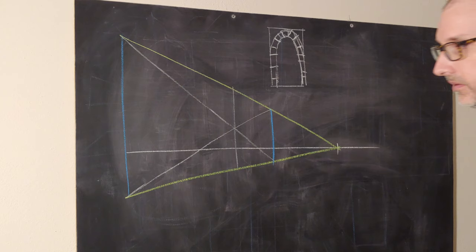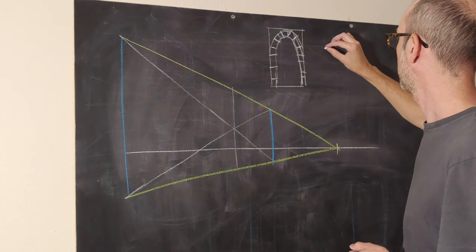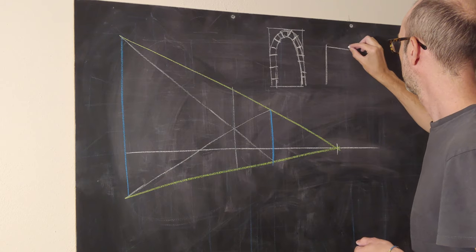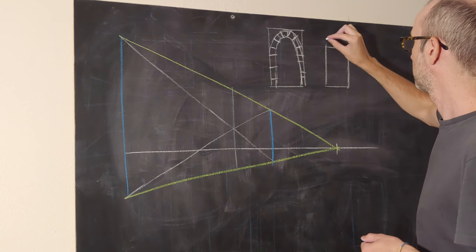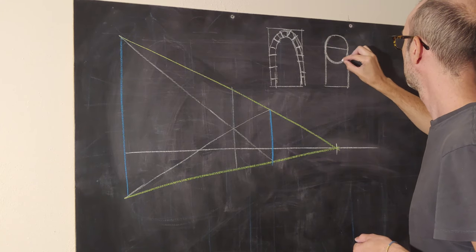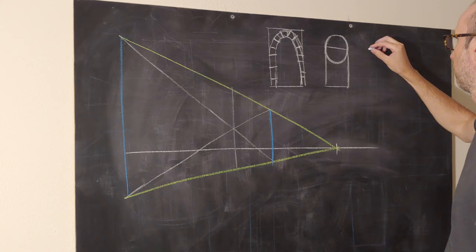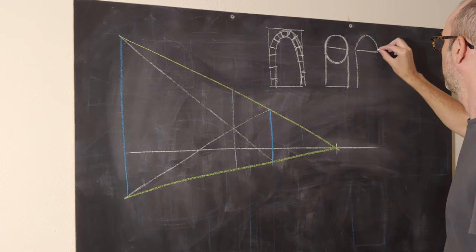So essentially what we're doing is we have some invisible work going on. With the archway itself, we've essentially got a rectangle and a circle, right? Or really in this case, we've got a half circle and a rectangle.